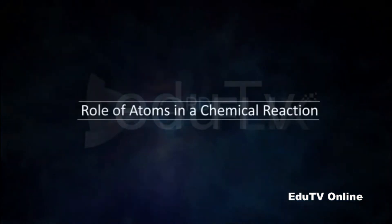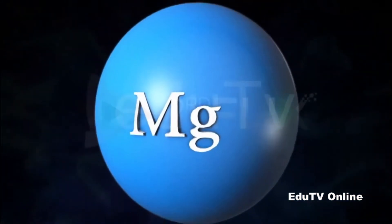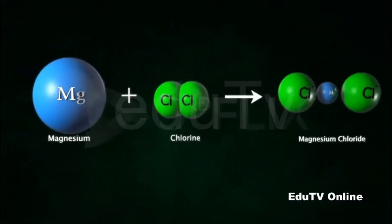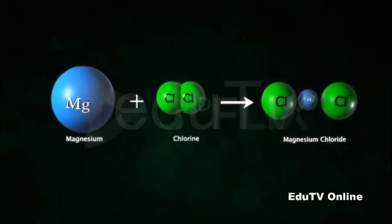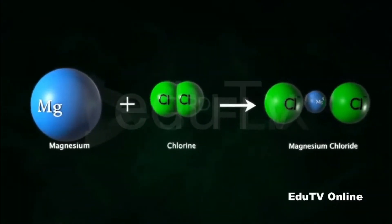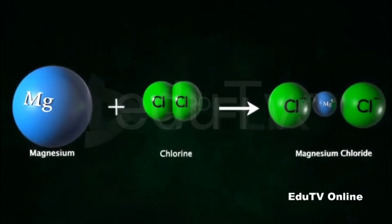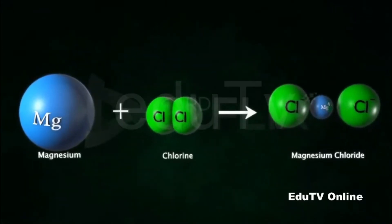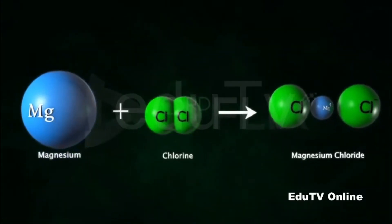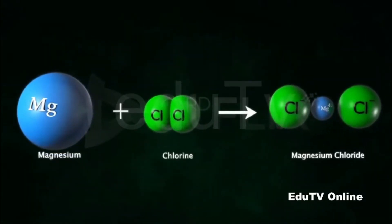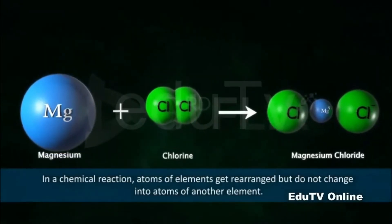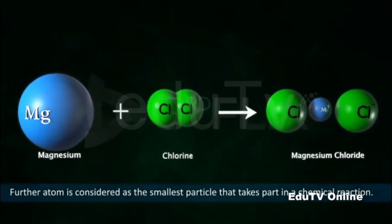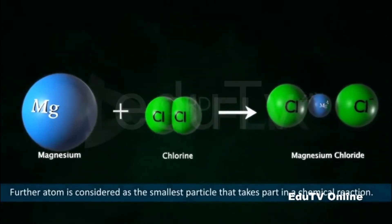Role of atoms in a chemical reaction: When two elements such as magnesium and chlorine react, the product formed is magnesium chloride. No new atoms are formed — even though there is a change in the arrangement of atoms in the product, magnesium chloride is made up of the atoms of the reactants, magnesium and chlorine, and no other. Dalton suggested that in a chemical reaction, atoms get rearranged but do not change into atoms of another element. The atom is also the smallest particle that takes part in a chemical reaction.